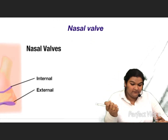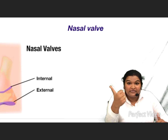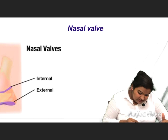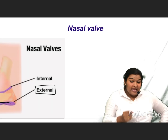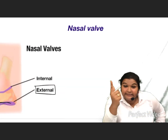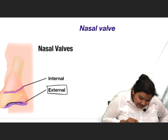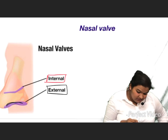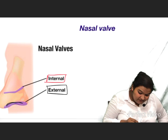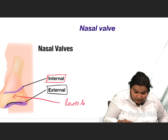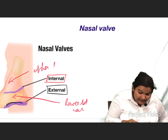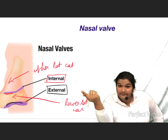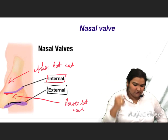Now let us move towards the nasal valve. We have two nasal valves — one is external and one is internal. The external nasal valve is present near the nostril. The narrowest part of the nasal cavity forms the internal nasal valve. This line is a faint border showing the lower lateral cartilage, and here we have the upper lateral cartilage — this line is the limen nasi, which forms part of the nasal valve.